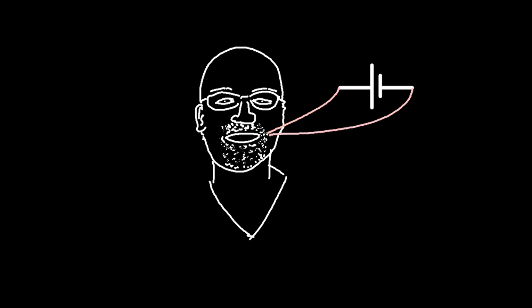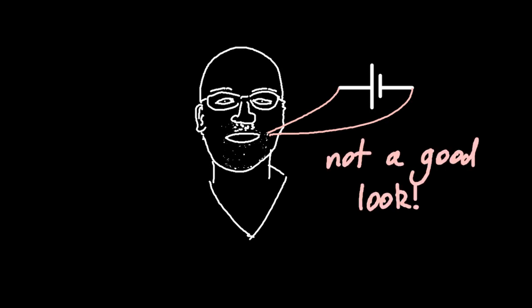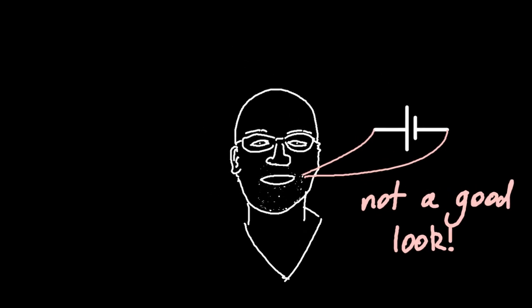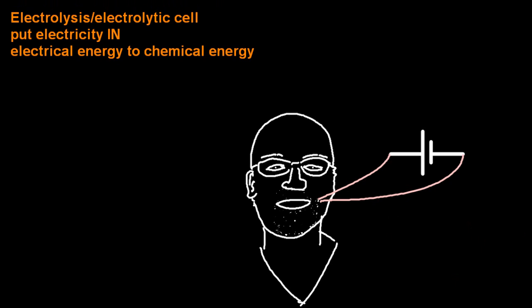Electrolysis, you're putting electricity in to break stuff up. So electrolysis for hair, you put electricity in. Be careful about the last day, you don't want to leave that little moustache there. Electro means electricity and lysis comes from the word to split, so splitting stuff up with electricity.